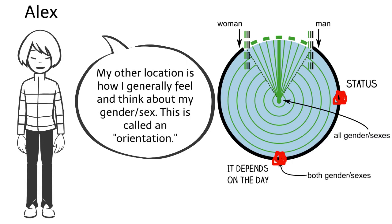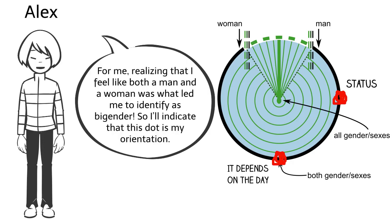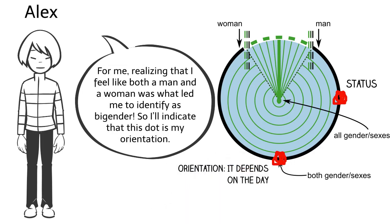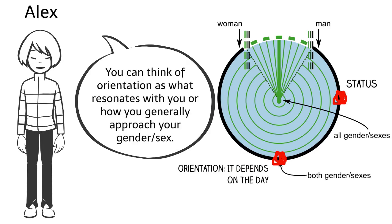My other location is how I generally feel and think about my gender sex. This is called an orientation. For me, realizing that I feel like both a man and a woman was what led me to identify as bigender. So I'll indicate that this dot is my orientation. You can think of orientation as what resonates with you or how you generally approach your gender sex.